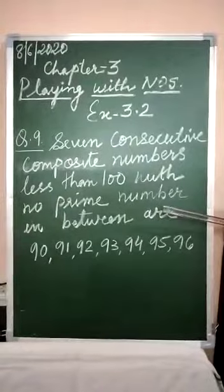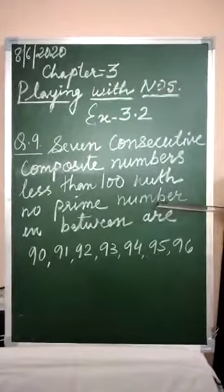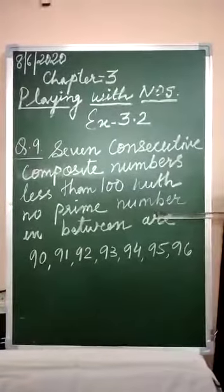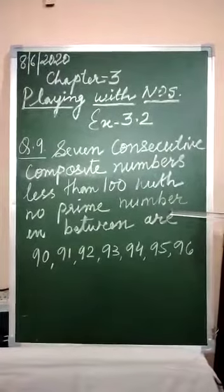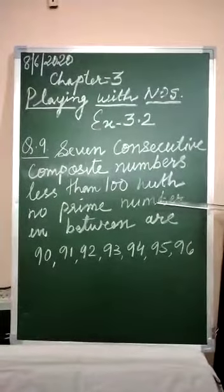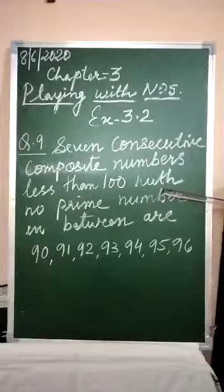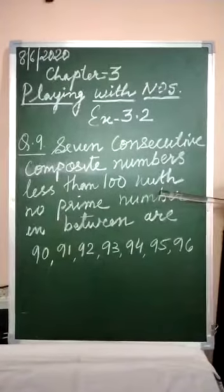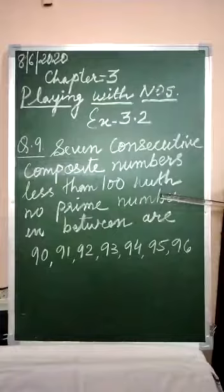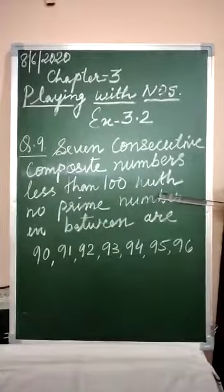Here this question can be solved using the activity which you have done in the previous class, that is finding out the composite and prime numbers. If you observe that activity or if you refer to page number 52, there is also a method given—that is the Sieve of Eratosthenes—where if you observe there...